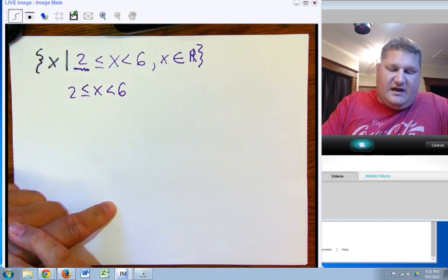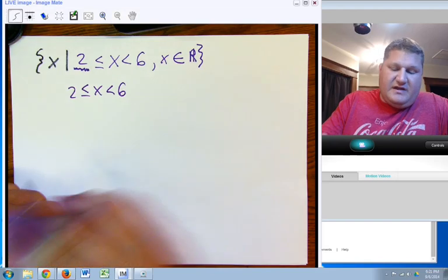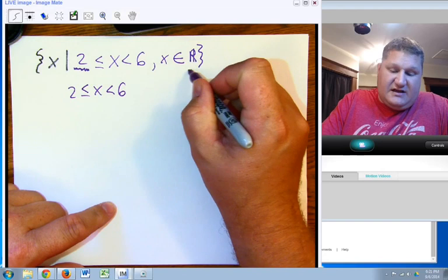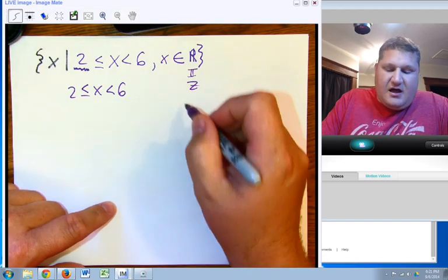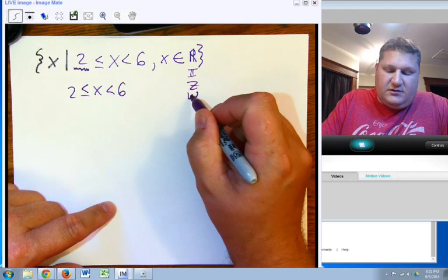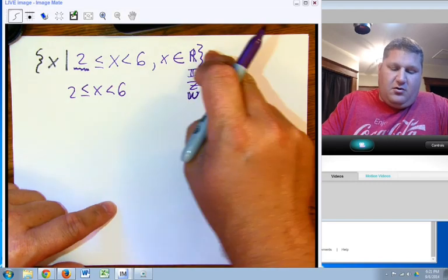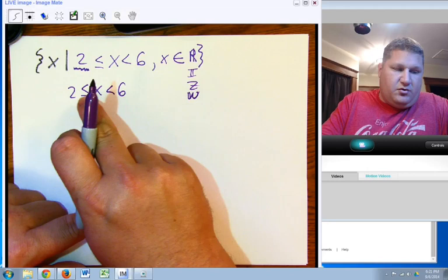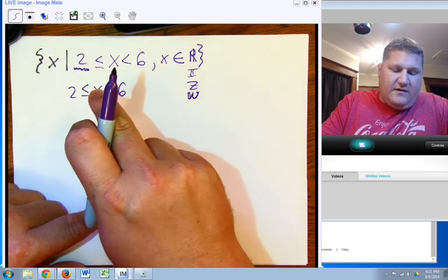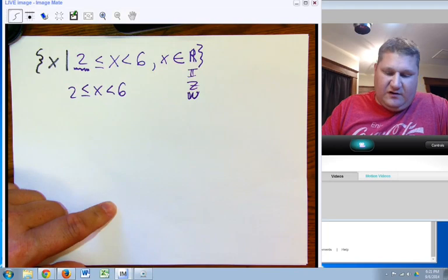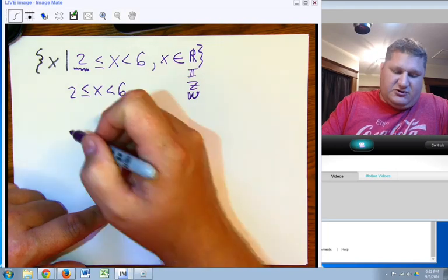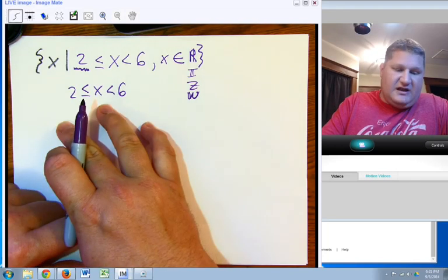The reason we have a set builder notation is because I could replace this with irrationals, I could replace it with integers, I could replace it with whole numbers. And so if it were whole numbers, it would only apply to 2, 3, 4, 5, not 6 because 6 isn't included. If there were integers, it would be the same thing since there's nothing negative in here to begin with.